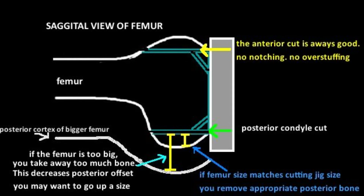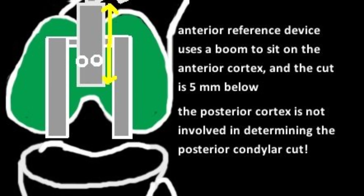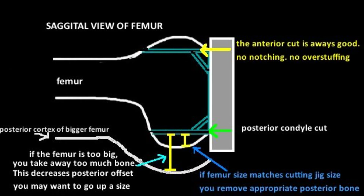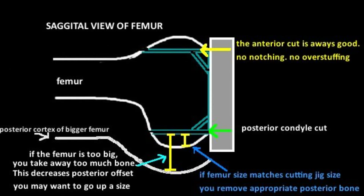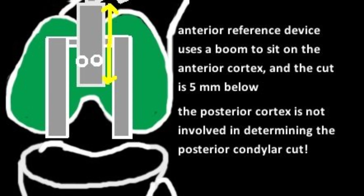The alternative is anterior referencing, which is effectively the opposite of posterior referencing. You directly measure the depth of the anterior cut using a boom that sits on the anterior cortex, then place two pins to hold the 4-in-1 cutting jig. The benefit is that the anterior depth is controlled — no notching, no overstuffing. The potential problem is that the posterior femoral condyle cut becomes more variable. If the femur is large relative to the guide, too much bone is removed posteriorly, decreasing posterior condyle offset and possibly reducing range of motion. If the femur is small relative to the guide, too little bone is removed, and the flexion gap will be smaller than the extension gap.